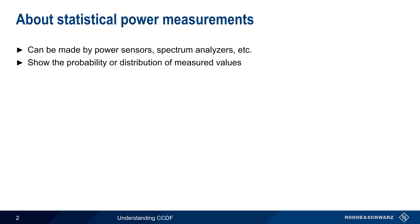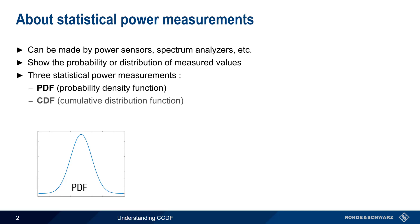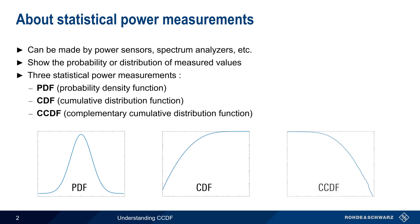These statistical measurements can show us the probability that the measured power takes on a certain value, or how the measured power values are distributed. Generally speaking, there are three primary statistical power measurements: the Probability Density Function or PDF, the Cumulative Distribution Function or CDF, and the Complementary Cumulative Distribution Function or CCDF. Let's start by looking at the Probability Density Function.